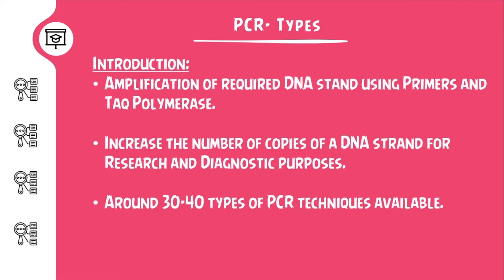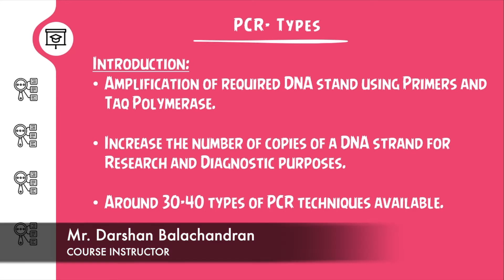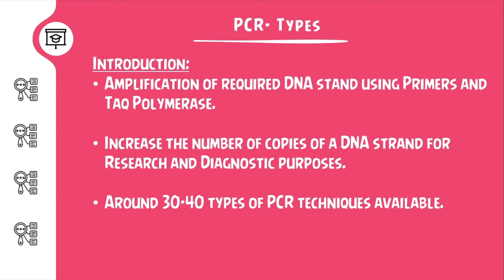Just a small introduction on why PCR is done. This is a molecular technique which is employed so as to amplify the gene of interest using primers and Taq polymerase. The main purpose is to increase the copies of your gene of interest which is then used for research and diagnostic purposes. Around 30 to 40 types of PCR are currently available, out of which we would be focusing on some of the most frequently used ones.